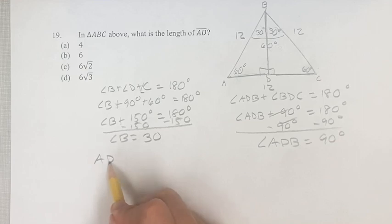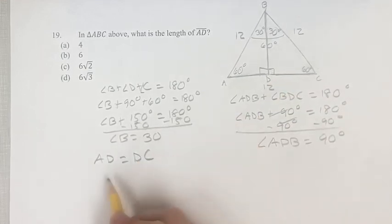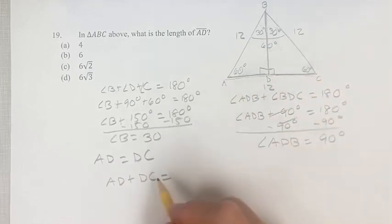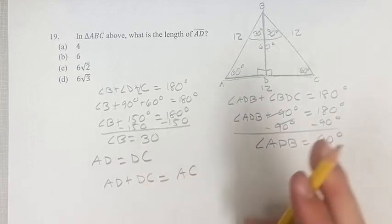Therefore, AD is equal to DC. And if we know AD plus DC is equal to the whole thing, which is AC, we know that they are equal to 12.